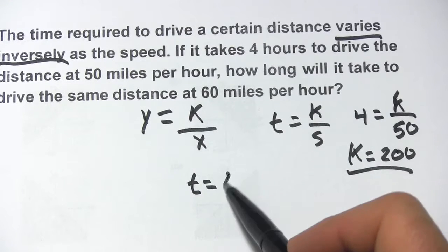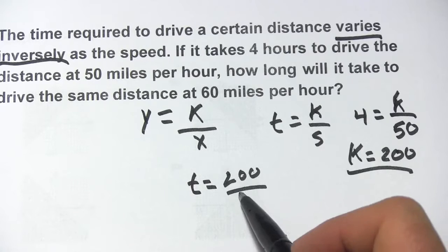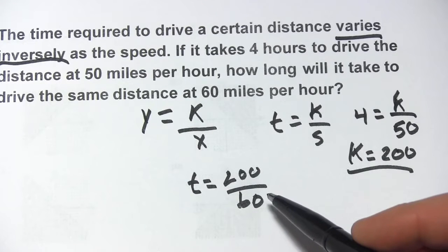How long? It equals k, which is 200, over the speed, which is 60. So we just take 200 divided by 60, and what is that?